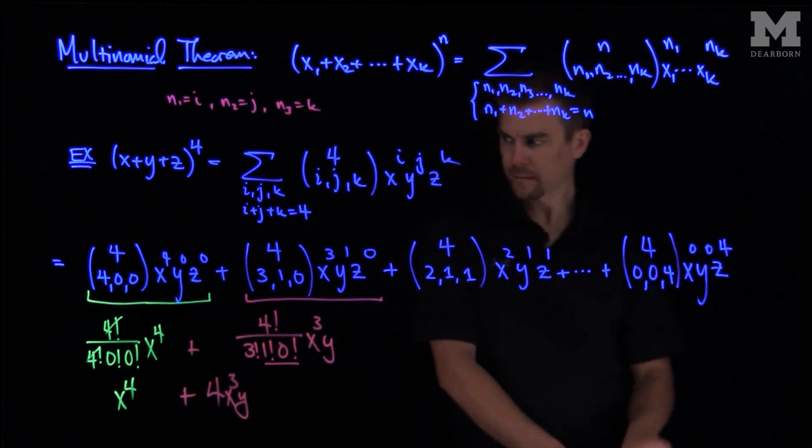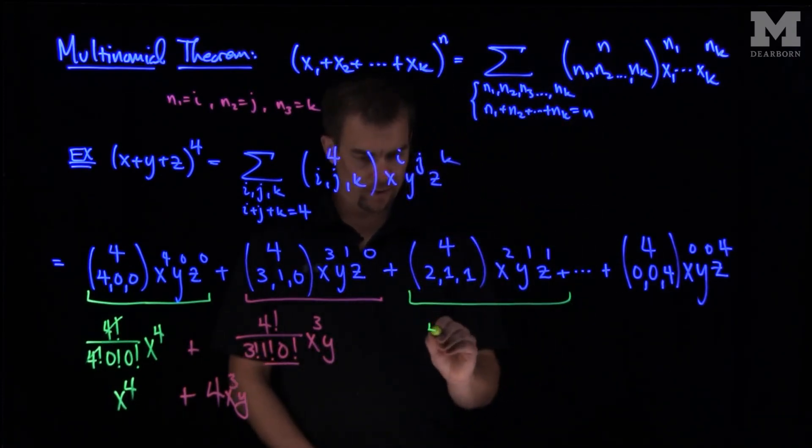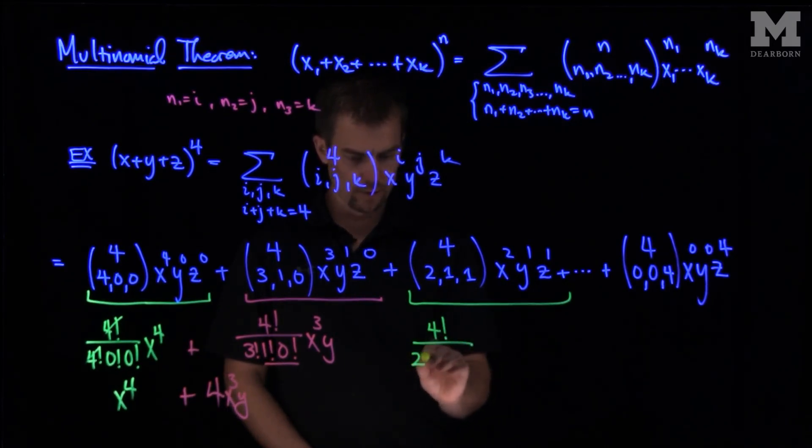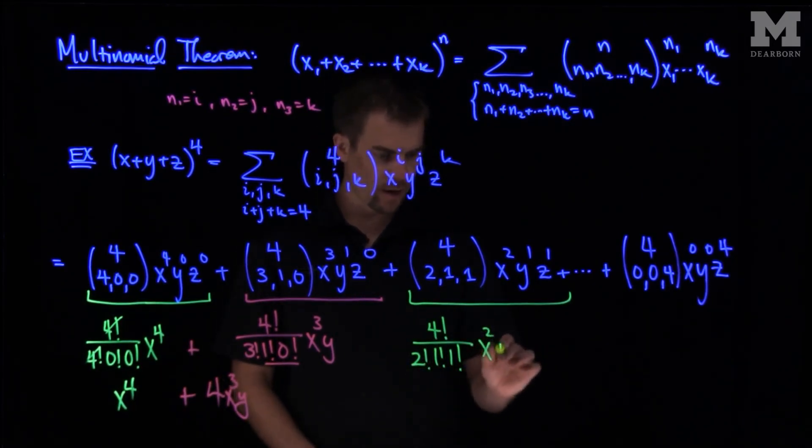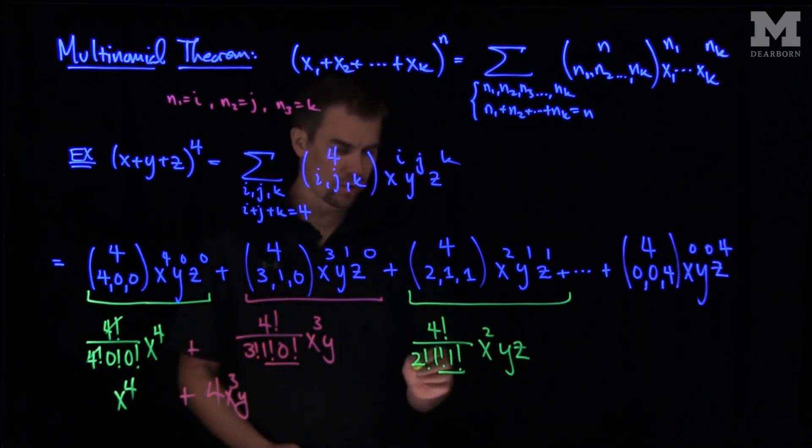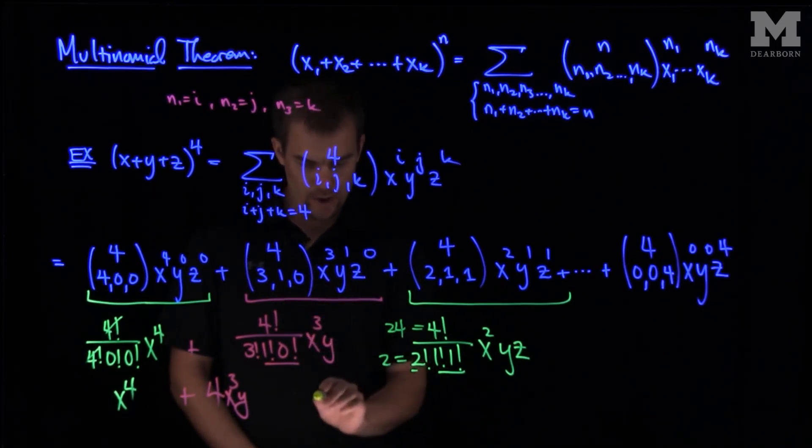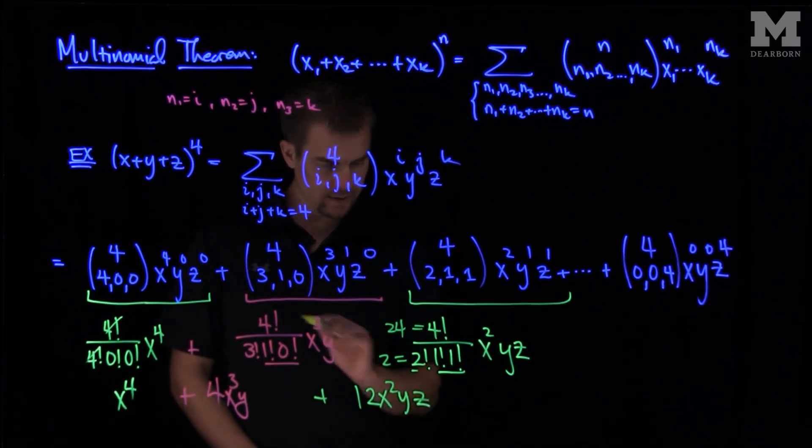If we look at this term over here, we see this will be 4! over 2!1!1!, x²yz. And now, the one factorials are just one, two factorial is two, four factorial is twenty-four, so this will be, this over here is twenty-four, and this over here is just two. So we're going to have a twelve x²yz.